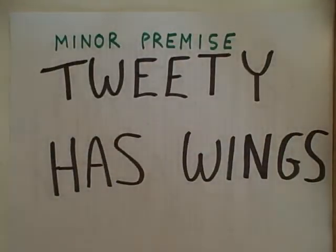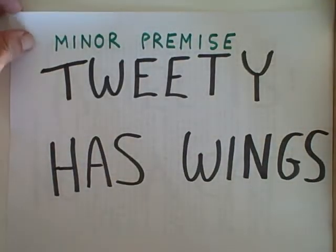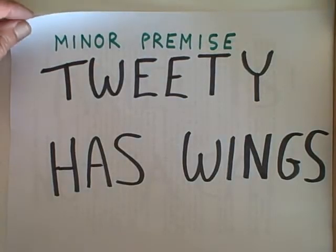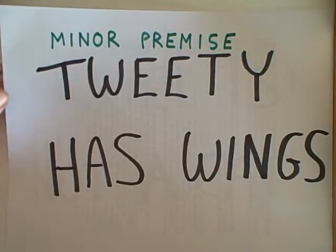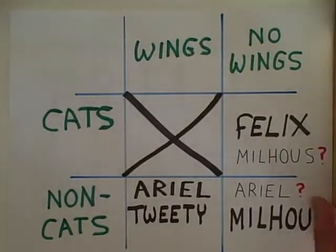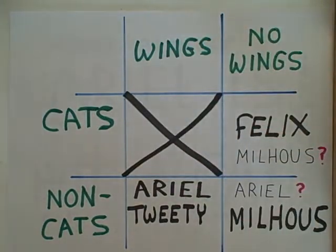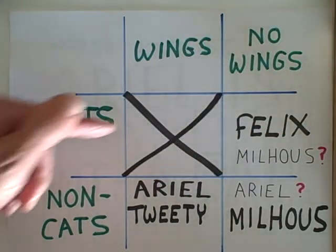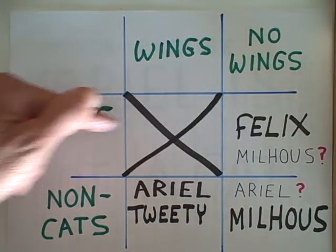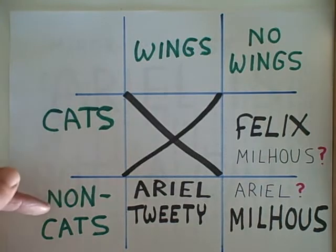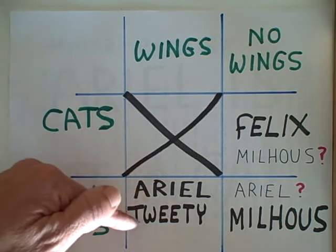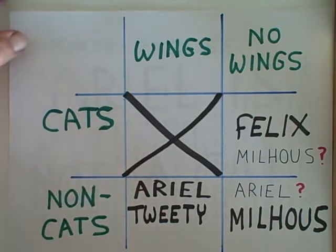Let's try another minor premise that will yield a valid conclusion: Tweety has wings. We know that Tweety is in the wings column, and because the cats-with-wings cell is empty — no cats have wings — Tweety must be a non-cat.